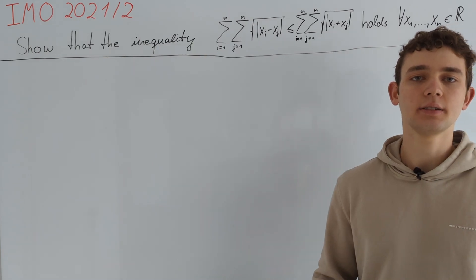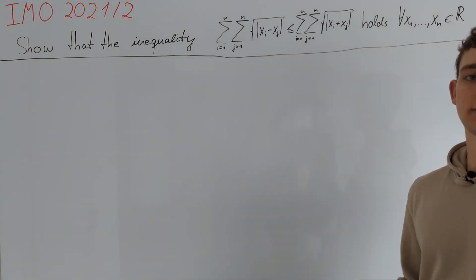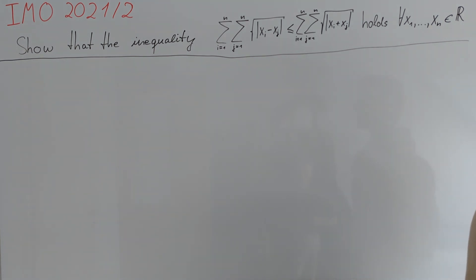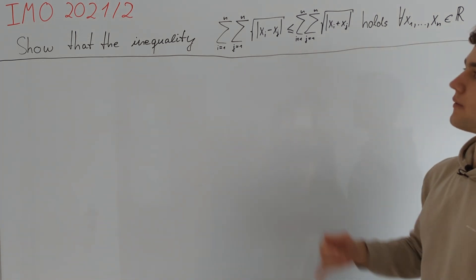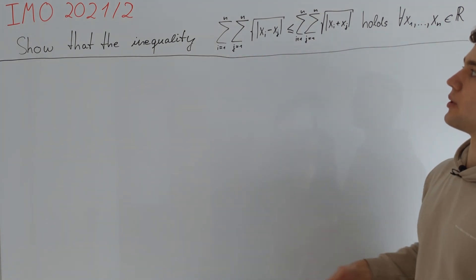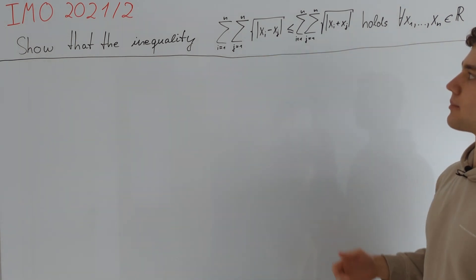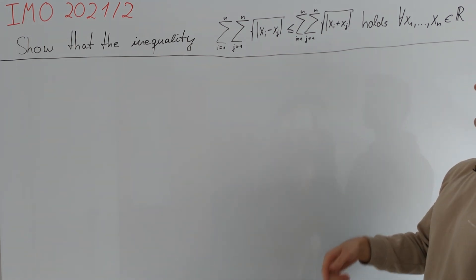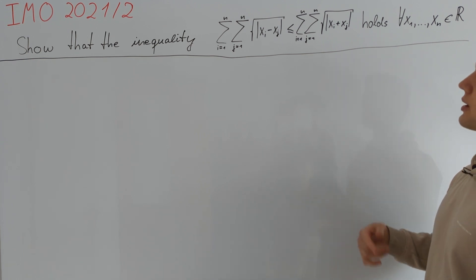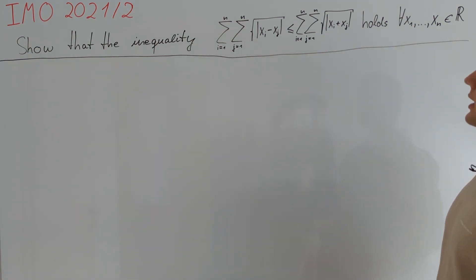Hey guys, today I will present a solution to IMO 2021 Problem 2 as suggested in the comments. We are asked to show that the following inequality holds for all x₁ up to xₙ real numbers: the double sum of i and j going from 1 to n of the square root of |xᵢ - xⱼ| is less than or equal to the same double sum of the square root of |xᵢ + xⱼ|.